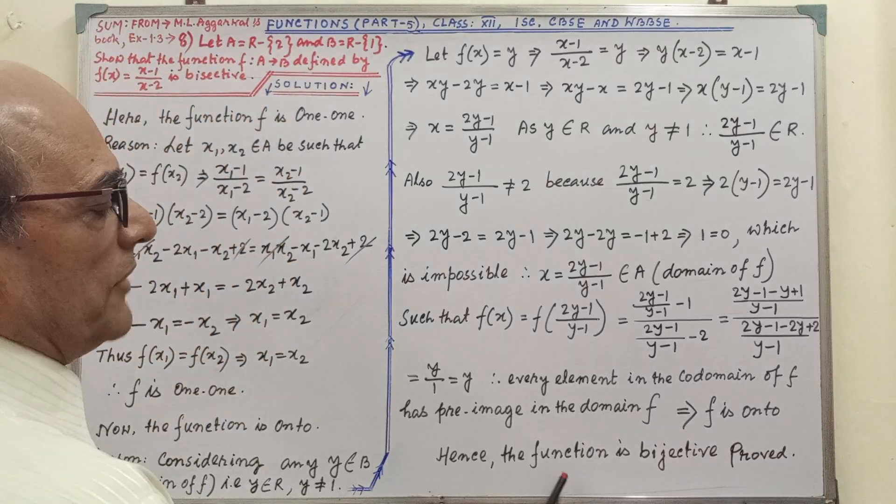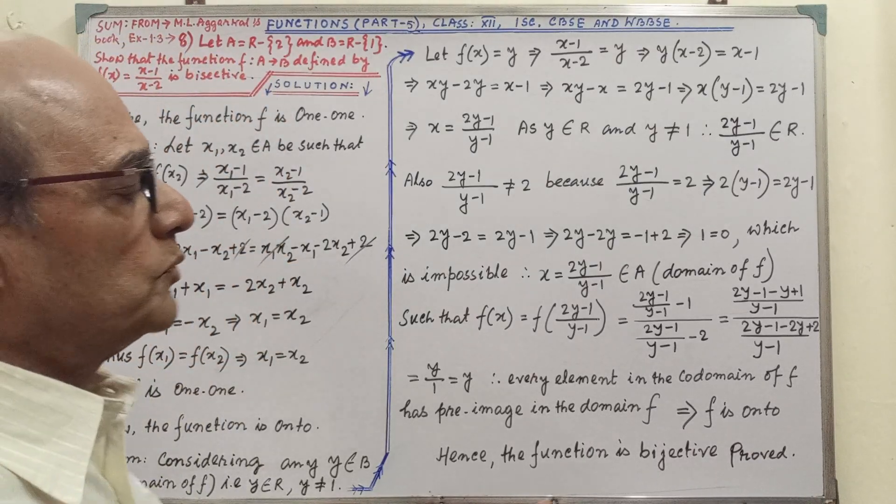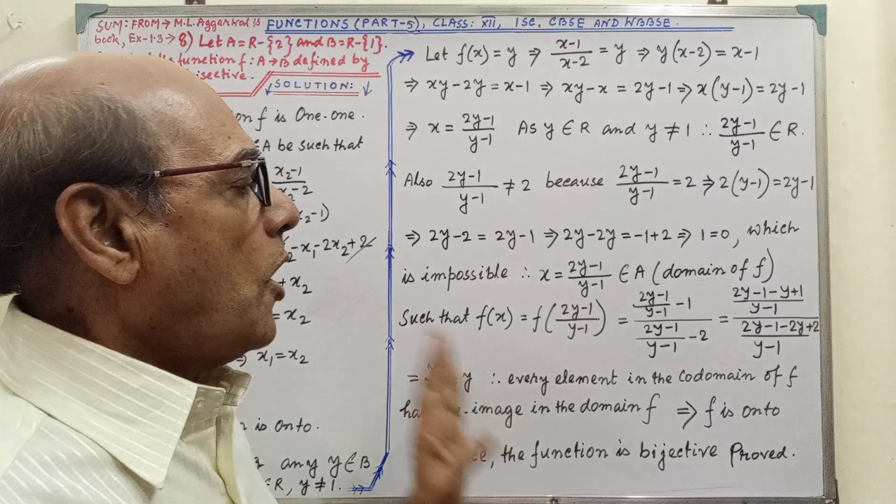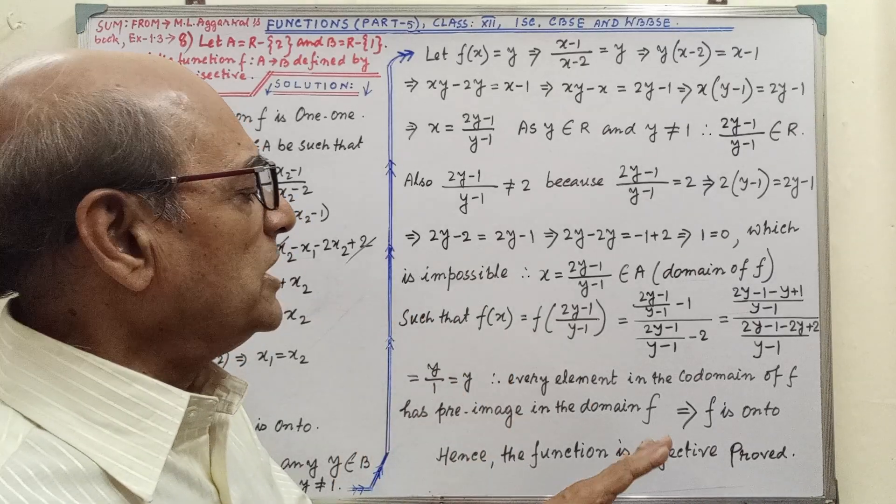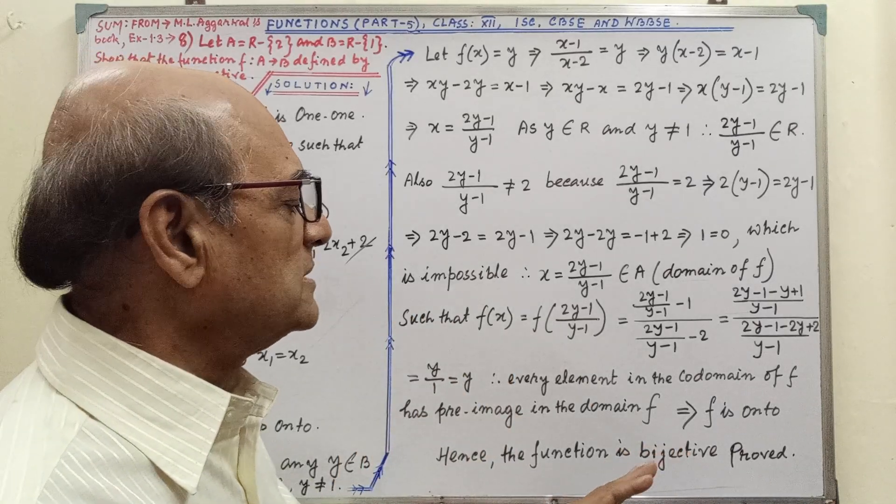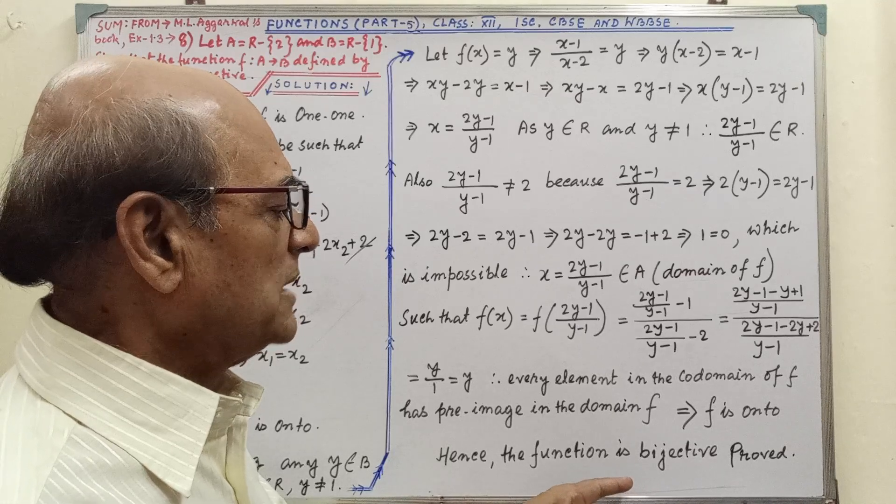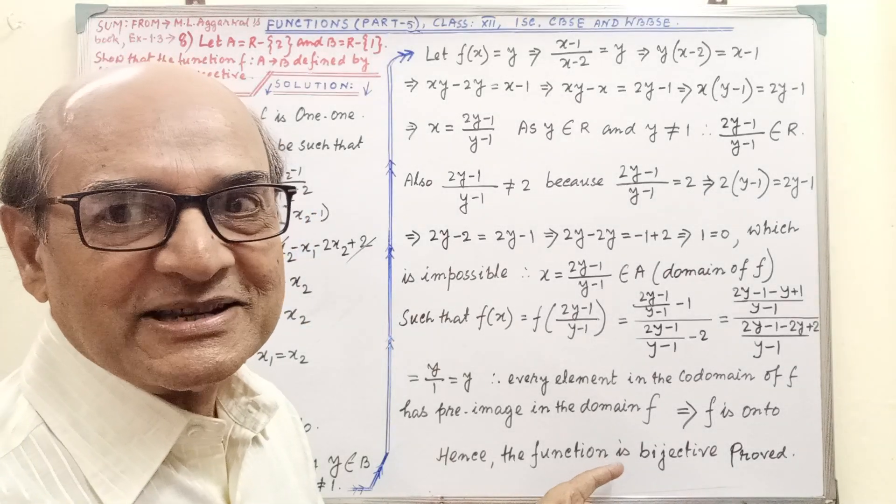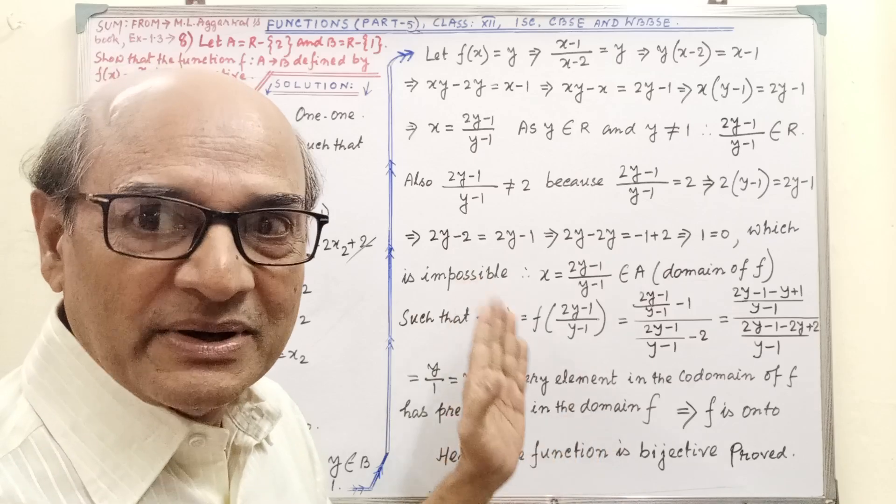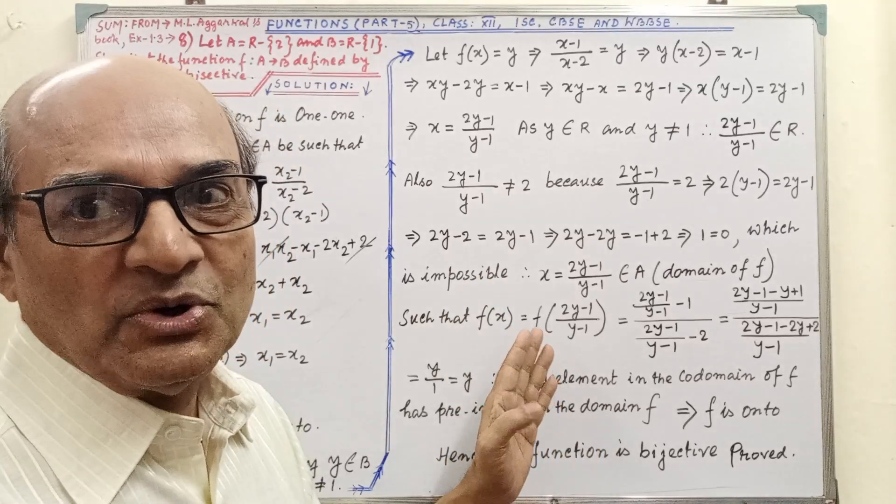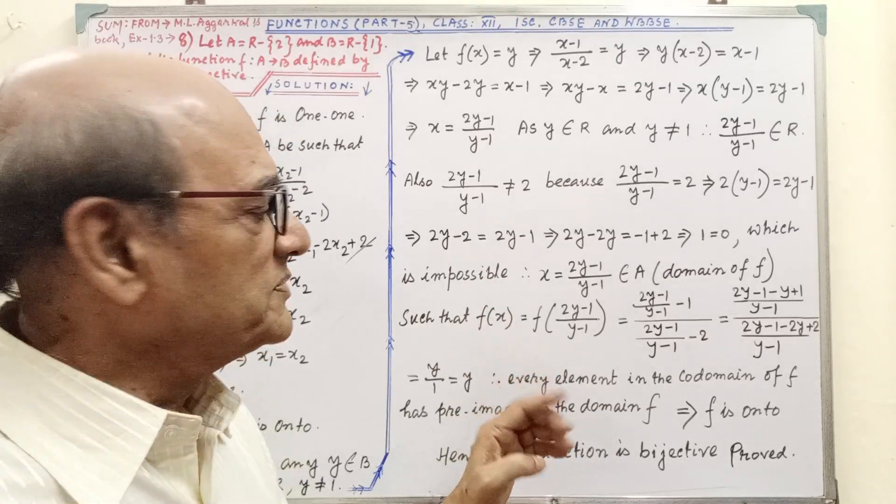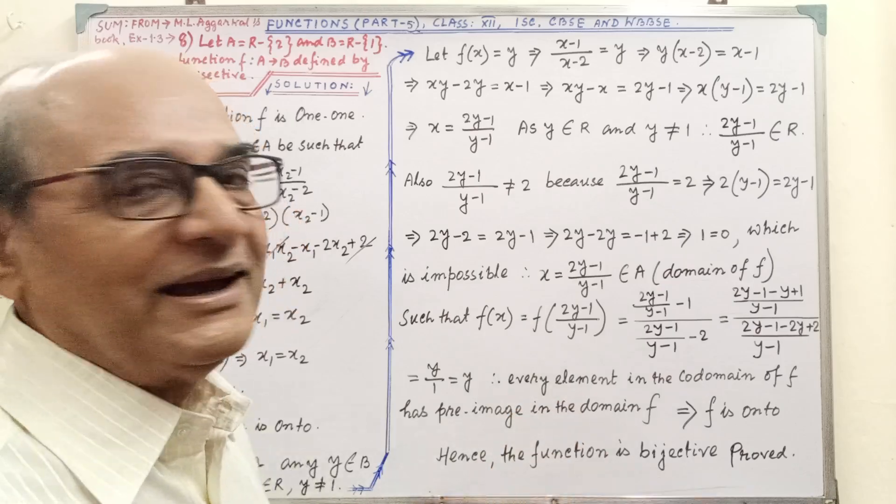Hence the function is bijective proved, that means one-one and each element we are getting the image, that is bijective. That is function part 5. In previous video, in 4, if you observe, then you will easily understand.